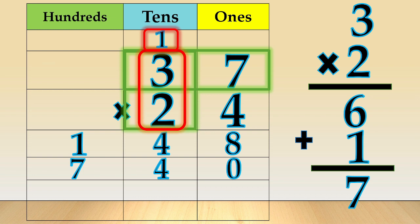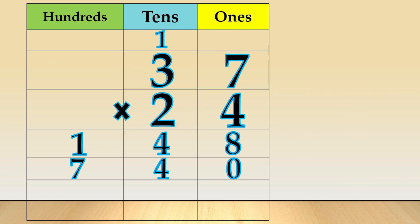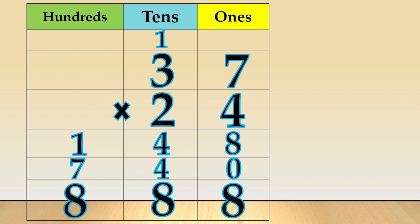Now, we add the partial products to get the final answer. So, 8 plus 0 is equal to 8. 4 plus 4 is equal to 8. And 1 plus 7 is equal to 8. Our final answer is 888.